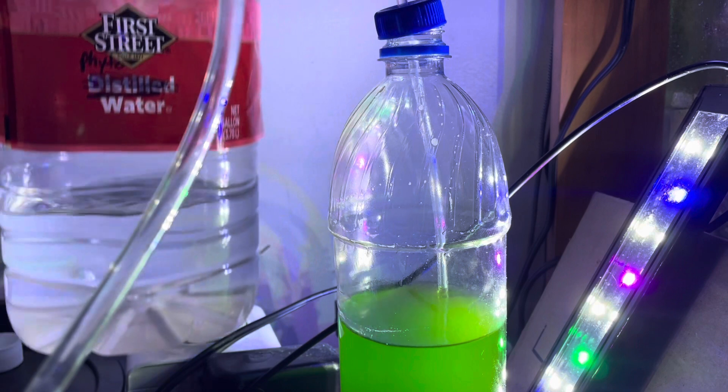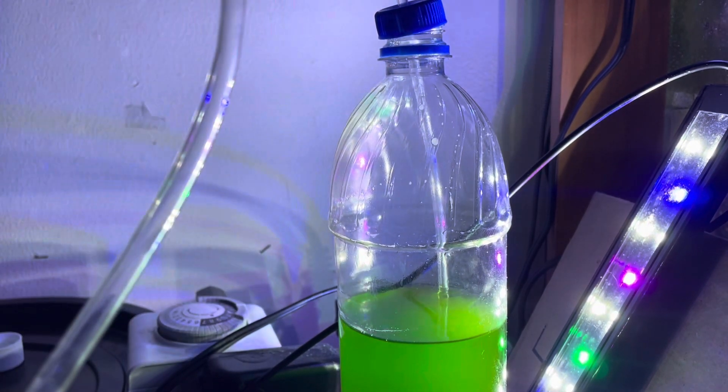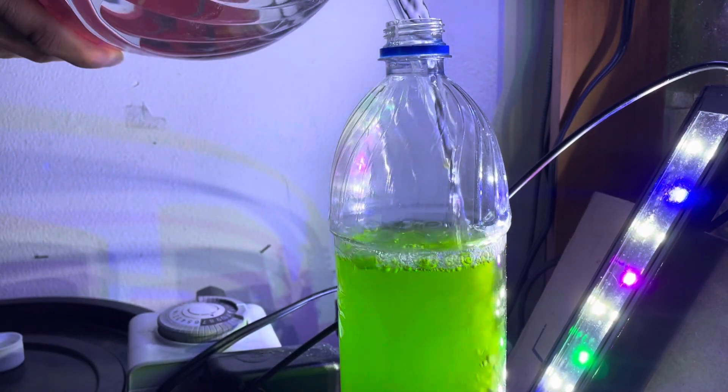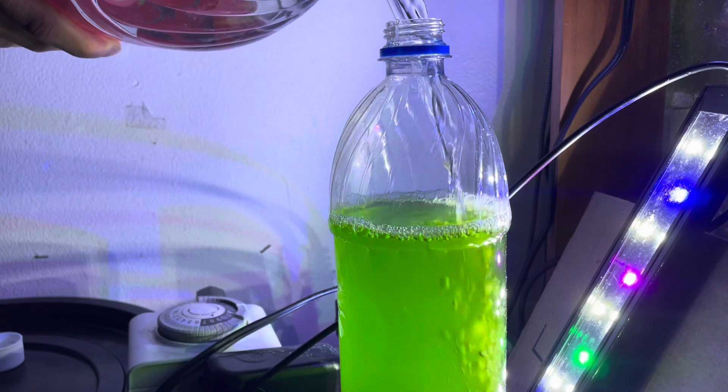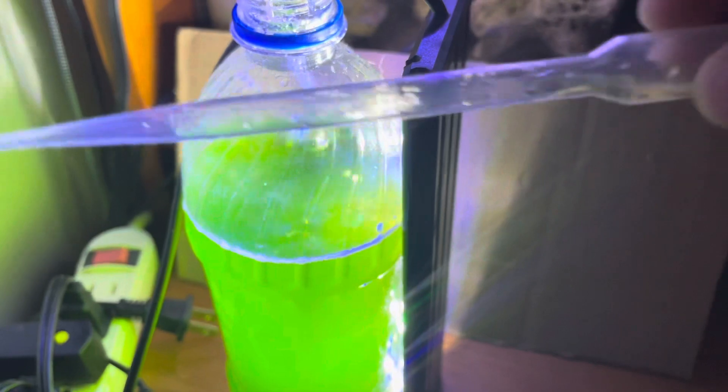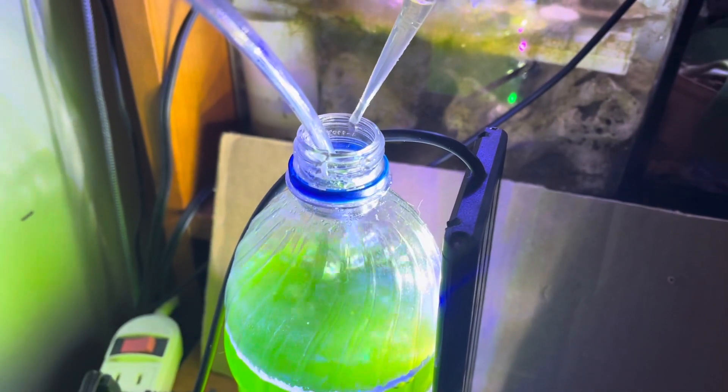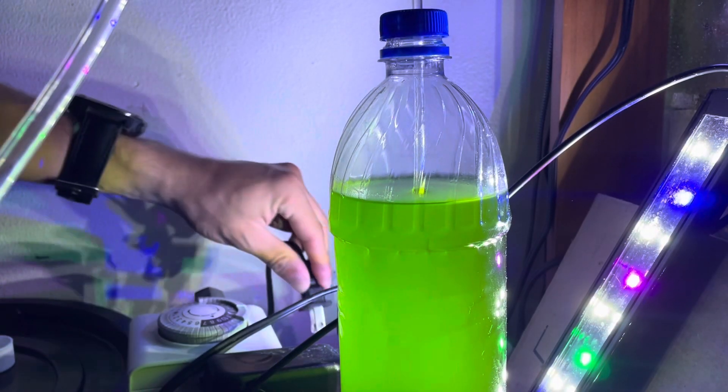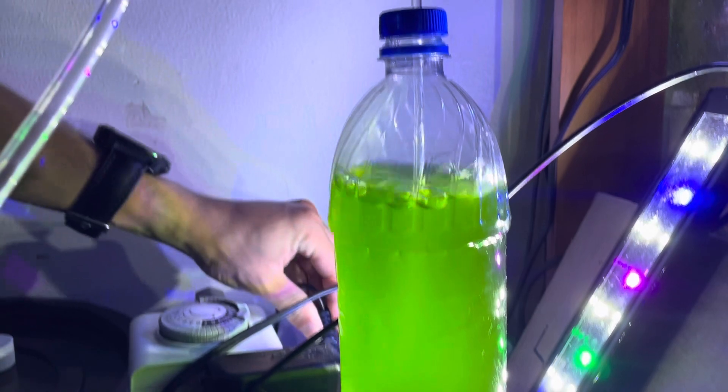Once you remove the portions you want for feeding and harvesting you can then add more of the seawater. This is the same water that we mixed previously in the video. Then you can add more of the fertilizer. I like to add about 10 to 15 drops. You can then put everything back together and wait for it to turn green for the next harvest.